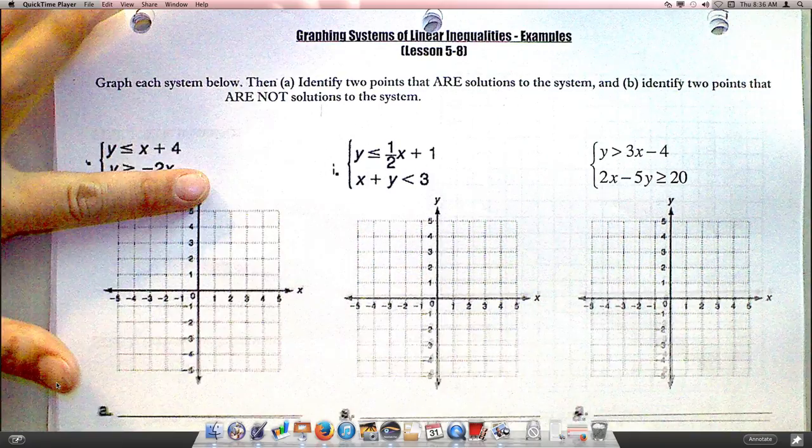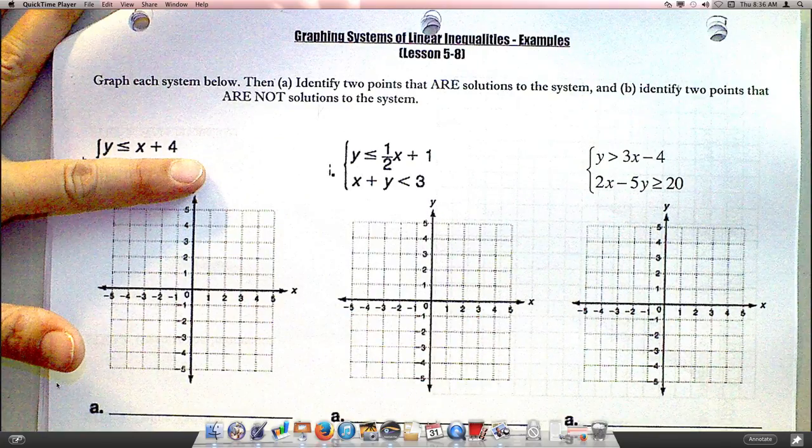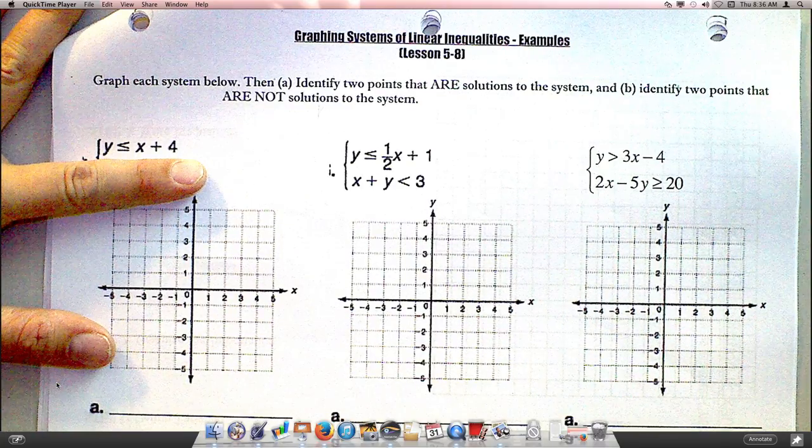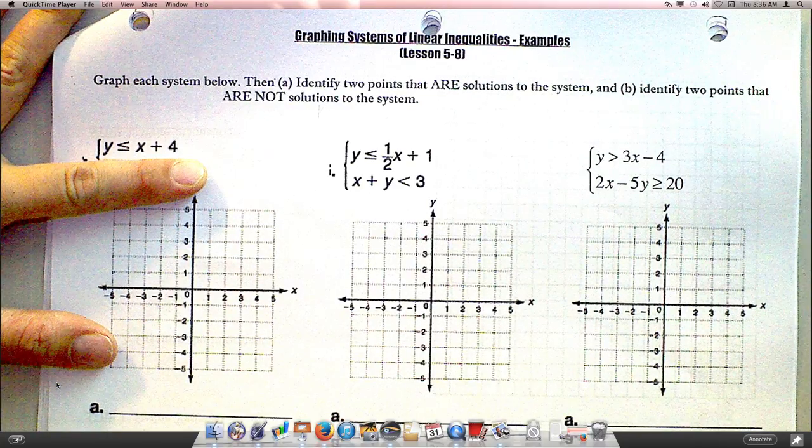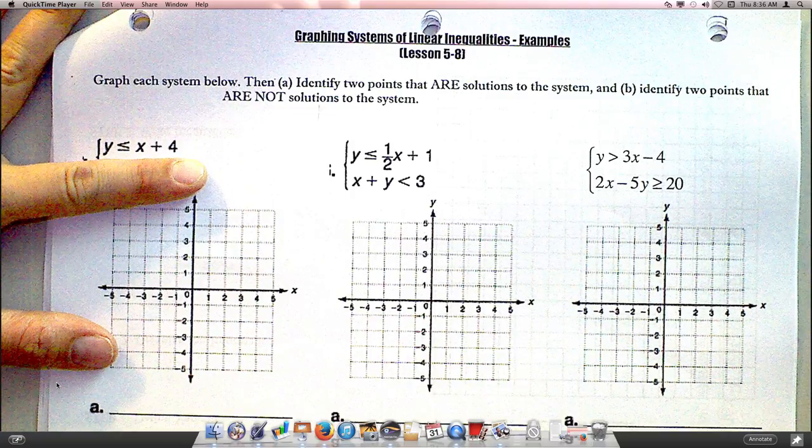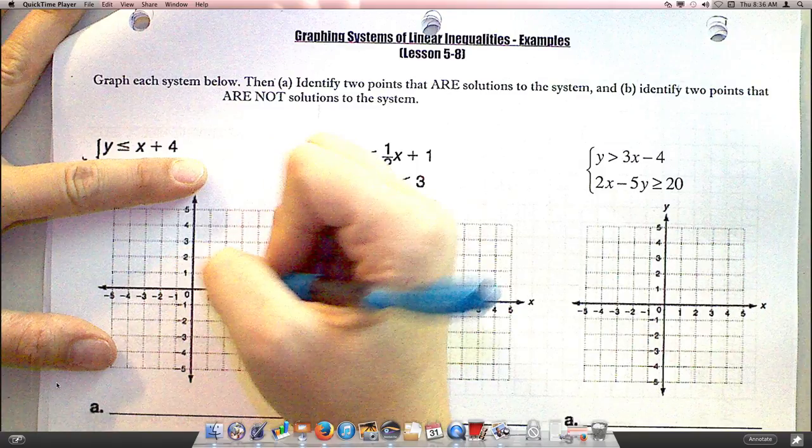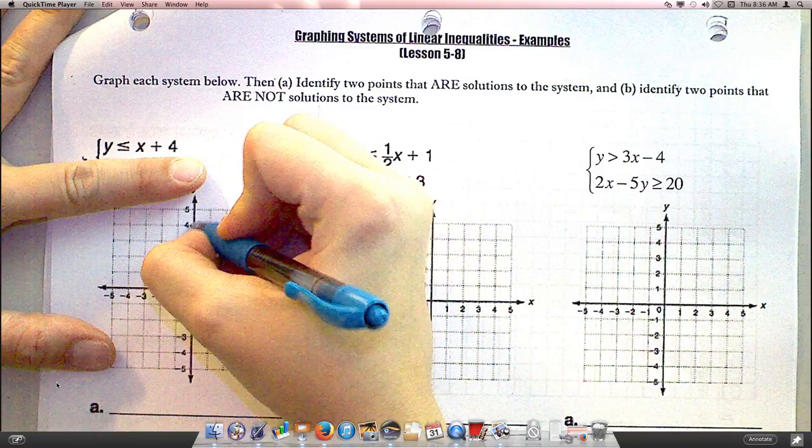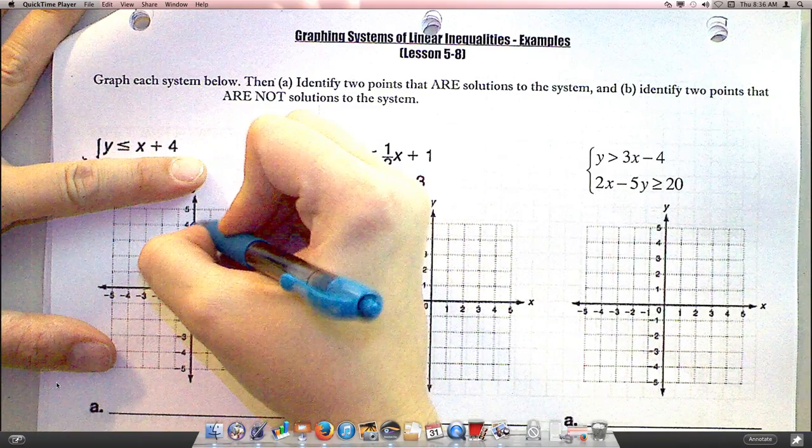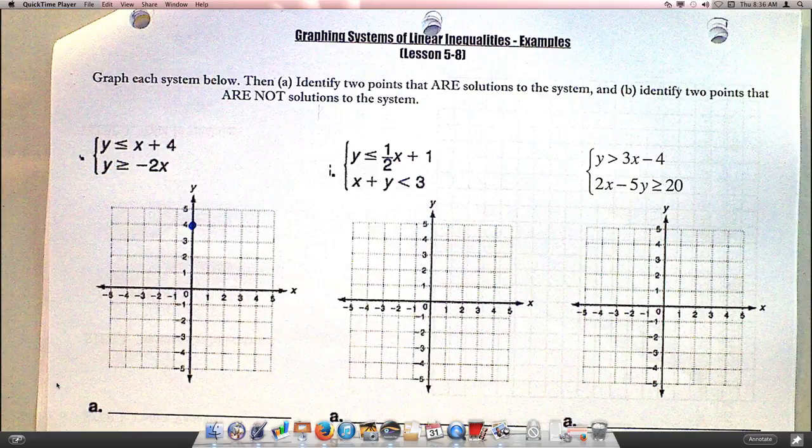So if we take just that first one, y is less than or equal to x plus 4, and I want to graph that. Where's that graph going to start? Start at 4 on the y-axis because my y-intercept is 4.